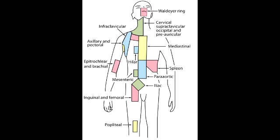What is the primary lymph node drainage site for the anal canal below the pectinate line? The anal canal below the pectinate line drains into the superficial inguinal lymph nodes.